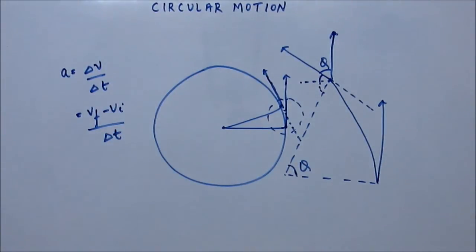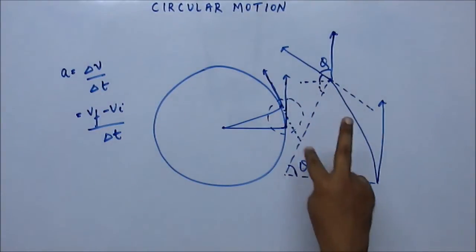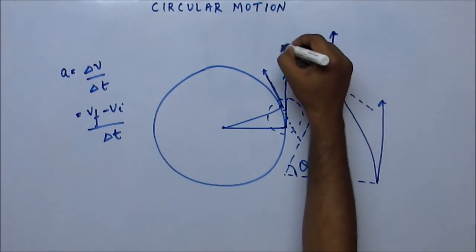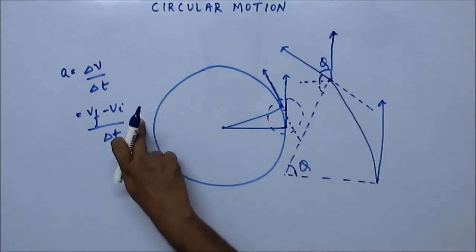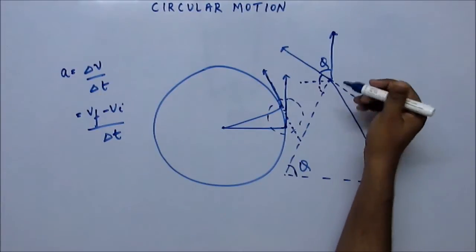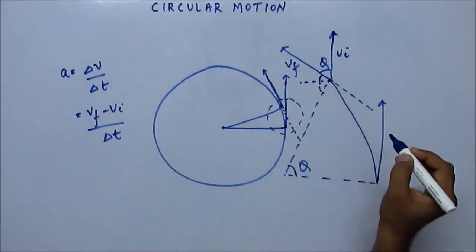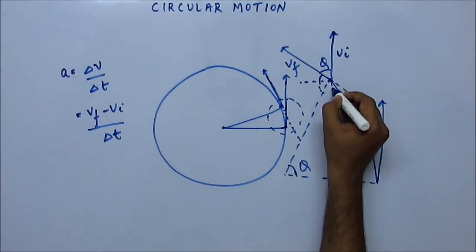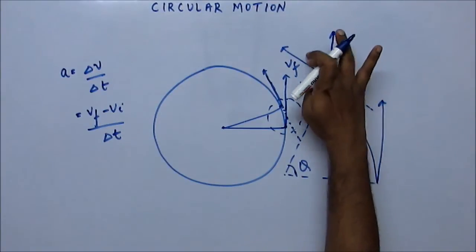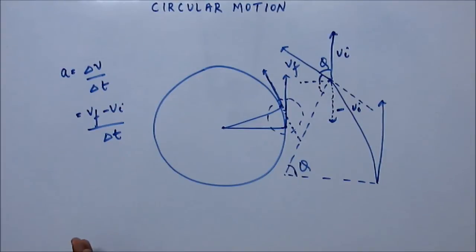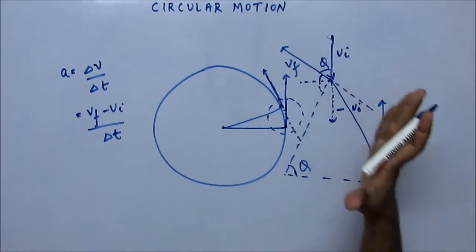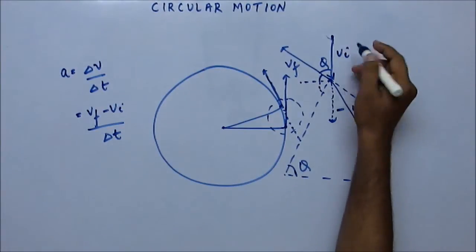The velocity vector has changed — its magnitude has not, but its direction has. The change in velocity vector is final minus initial. The final velocity vector is this vector and the initial is this one. The negative of a vector is just opposite in direction but the same magnitude. So minus vi will point in the opposite direction. We need to do the summation of vf and minus vi to find the change in velocity.